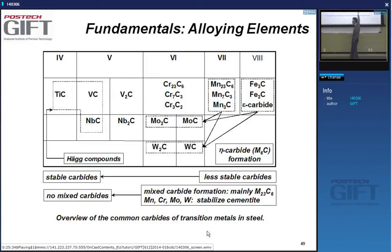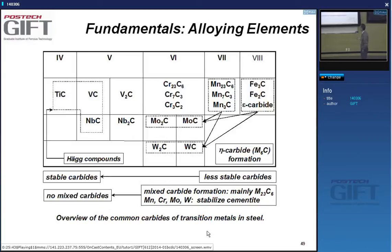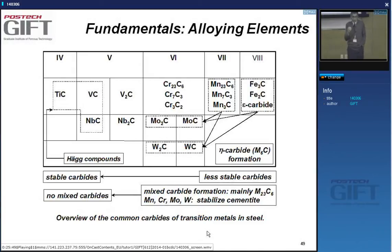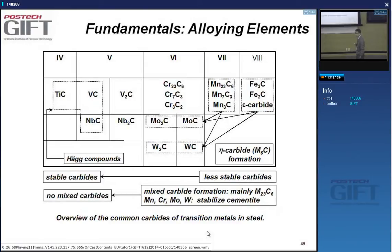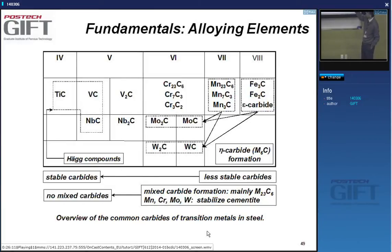What do I mean by mixed carbides? For instance, in the presence of manganese, cementite will very often not be pure Fe3C—some of the iron atoms will be replaced by manganese. That is a mixed carbide. Similarly, if your alloy contains a little bit of molybdenum or tungsten, some of the iron in the cementite will be replaced by the tungsten or molybdenum.